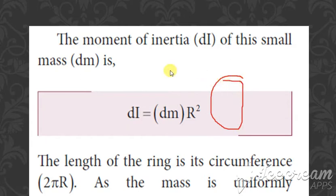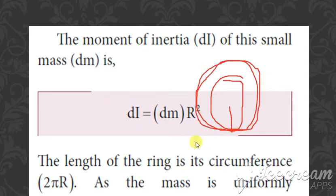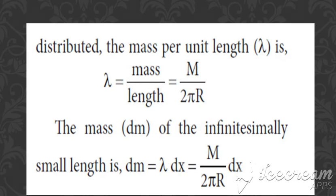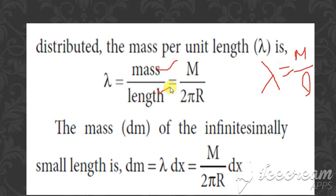The ring moves in a circular path from 0 to the full circumference, so the circumference is 2πR. The second formula is lambda (linear mass density) = M divided by the total length, which is the circumference 2πR. So lambda = M / (2πR).